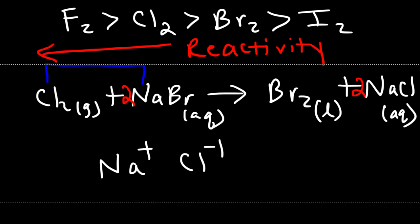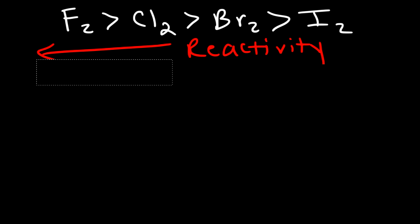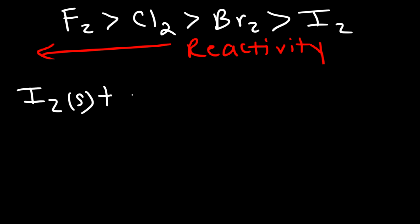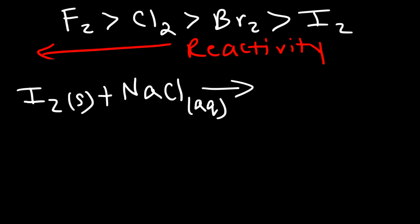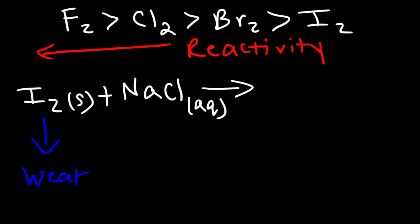Now for one more example — the final one for this video. Let's react solid iodine with aqueous sodium chloride. Is iodine strong enough to displace the chloride ion out of the solution? Iodine is on the right side — it's less reactive than chlorine. So because it's weaker, this reaction will not proceed as written. Our answer is simply no reaction. Iodine is not reactive enough to displace the chloride out of the solution.